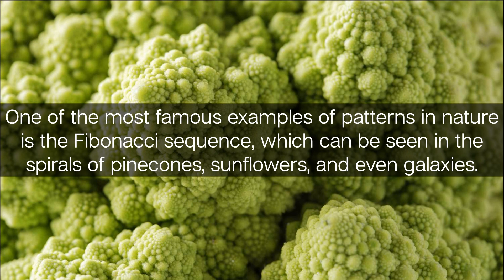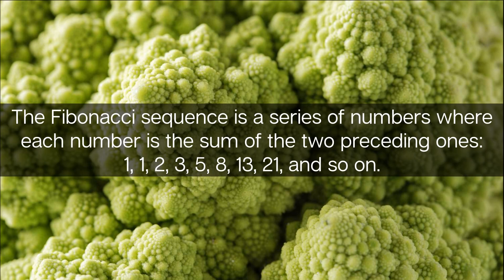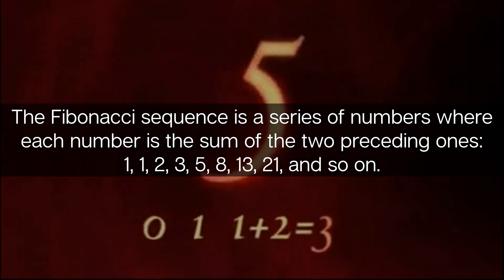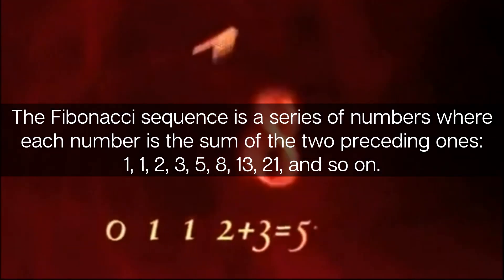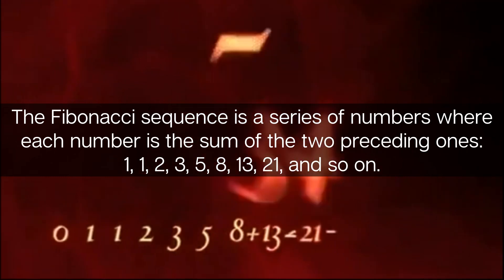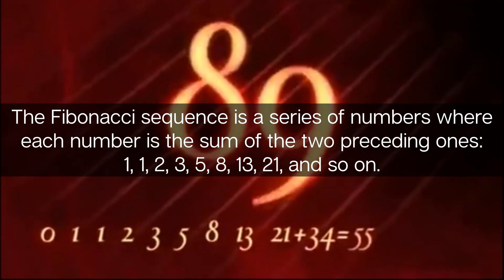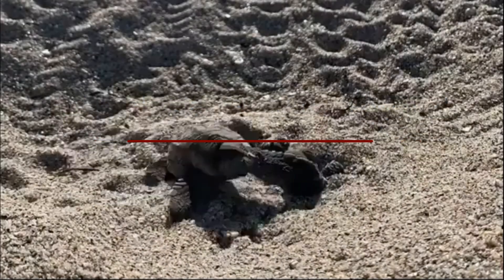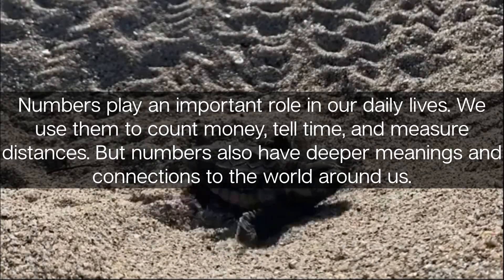The Fibonacci sequence is a series of numbers where each number is the sum of the two preceding ones: 1, 1, 2, 3, 5, 8, 13, 21, and so on. Numbers in the world. Numbers play an important role in our daily lives. We use them to count money, tell time, and measure distances.